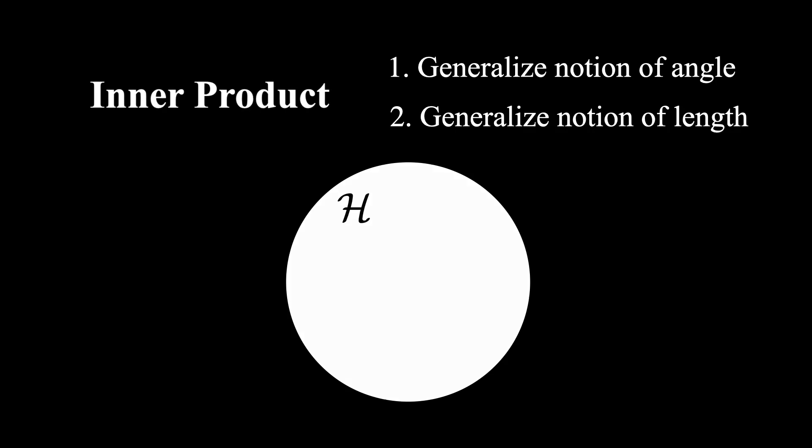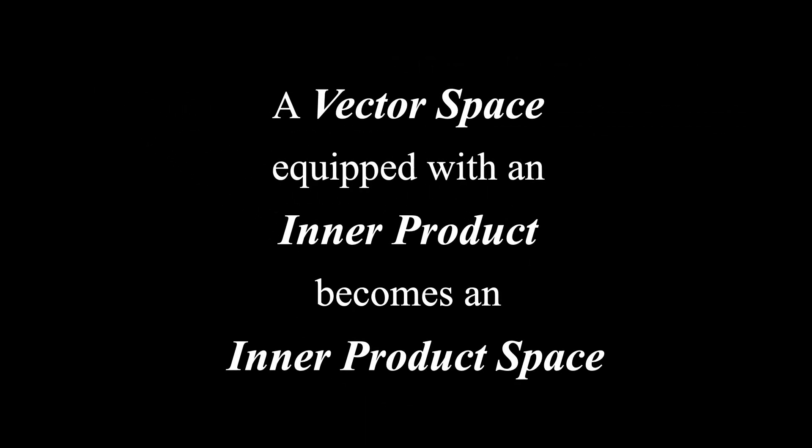The technical lingo is that a vector space is a specific mathematical structure that obeys certain axioms. And if you define an inner product on it, then you equip the vector space with an inner product. This turns the vector space into an inner product space.